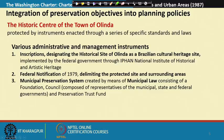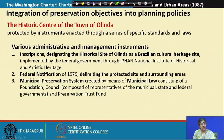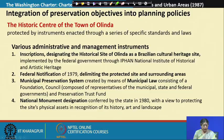We can see that at the top level it was the federal government which did the inscription and the federal notification deciding the boundary. Then the municipal local authority implemented it through a municipal law, composed of a council at both state and federal level as well as a preservation trust fund — so the economy is coming into the picture. A national monument designation was conferred by the state in 1980 to protect the site's physical assets in recognition of its history, art, and landscape. So there were a series of steps taken in terms of legal, administrative, and financial resources.